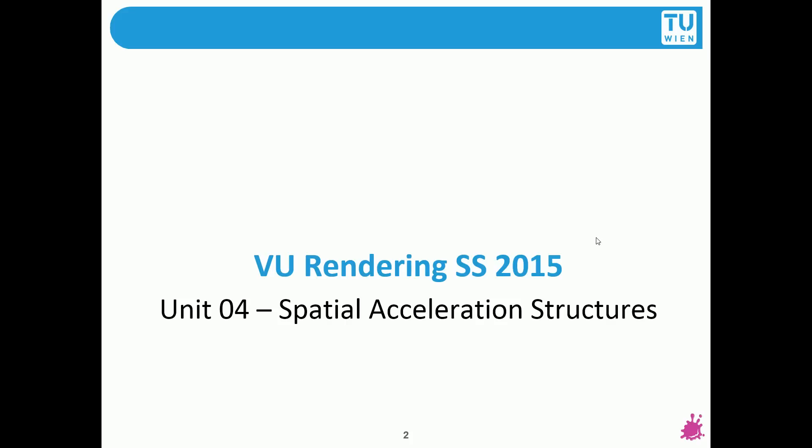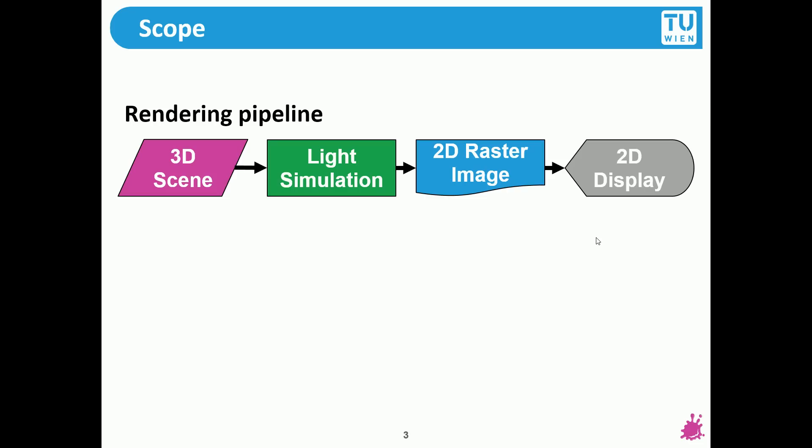So spatial acceleration structures. Where are we? The rendering pipeline as it was shown in the first lecture. We start with a 3D scene, perform some kind of light simulation, generate an image out of it that's going to be displayed.